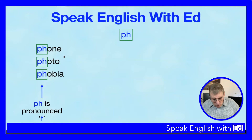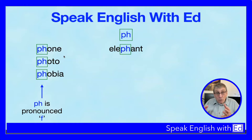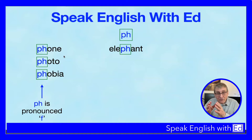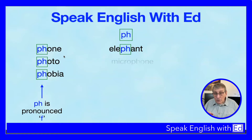Now, what about when PH appears in the middle of a word? Here we've got the word 'elephant.' The PH is in the middle, but it's still pronounced with an F sound, just the same as in phone, photo, and phobia. Elephant — the PH is in the middle of the word.